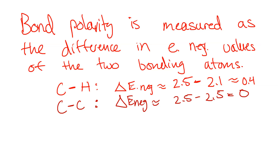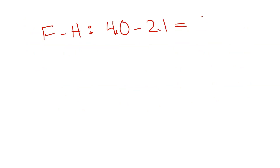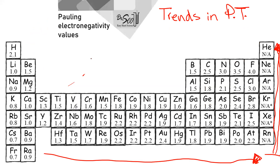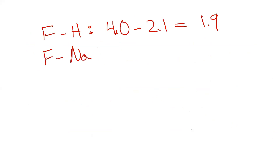Fluorine minus hydrogen: 4.0 minus 2.1 gives you 1.9. Let's go fluorine minus sodium — fluorine is 4.0, sodium is 0.9 — so 4.0 minus 0.9 gives you 3.1. Now let's actually look at the range values. The fluorine-sodium result is the classic example of an ionic bond, and the fluorine-hydrogen is definitely covalent but with a large difference.